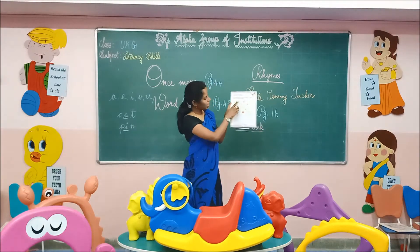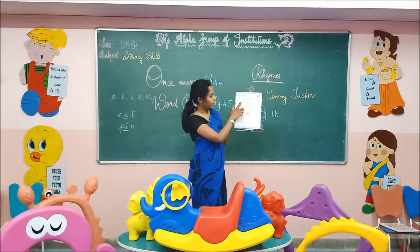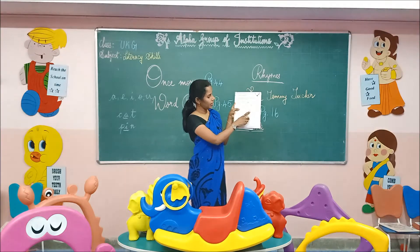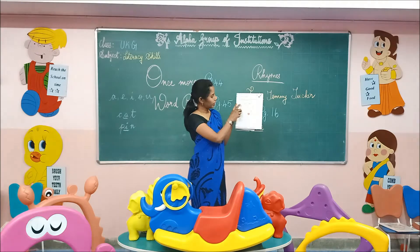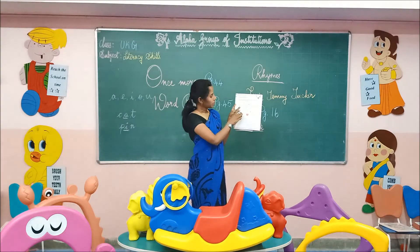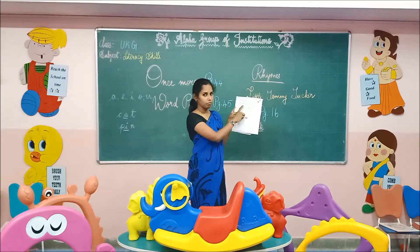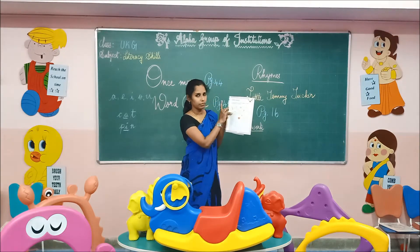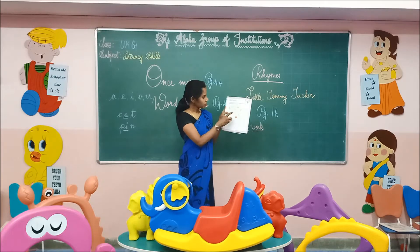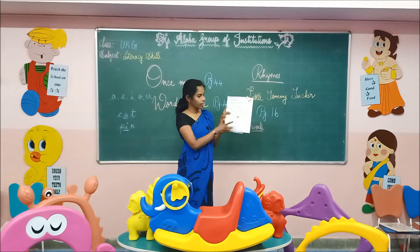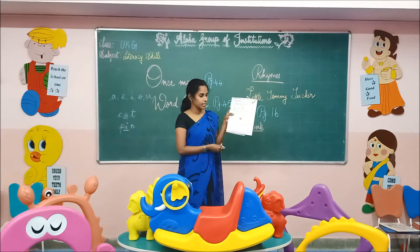The vowels are given here: A, O, I, E, U. The related pictures are given on both sides. You have to identify the picture and its name, and find out whether the vowel is coming in that word. I will show you an example.